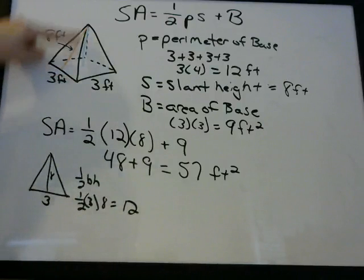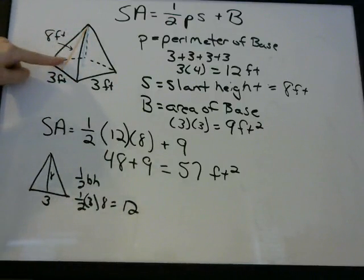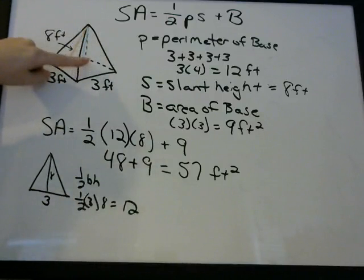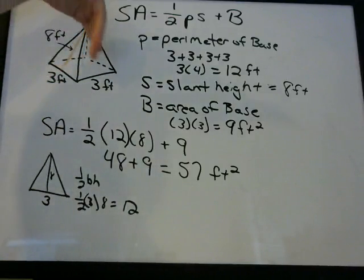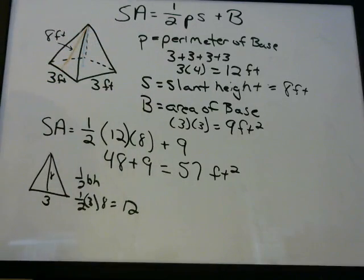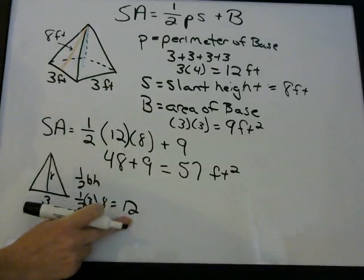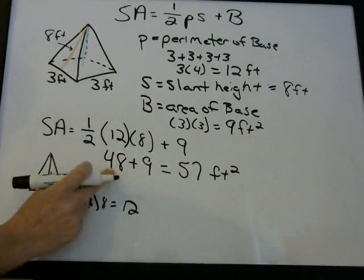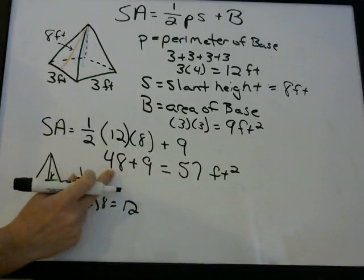That's one-half times 3 times 8, which equals 12. So if this triangle's area is 12, then the front face, this face, and each face all have the same area of 12 feet squared.